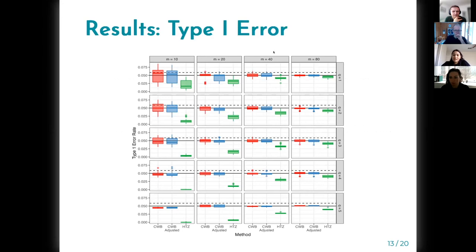So this is the result for the type I error rates. On the x-axis you have the CWB test, the CWB adjusted test, and the HTZ test. On the y-axis we have type I error rates.